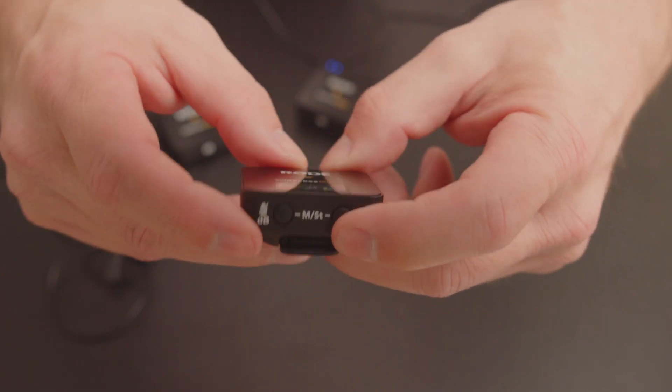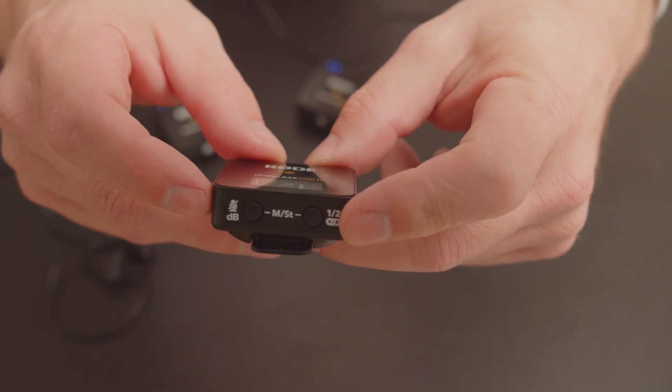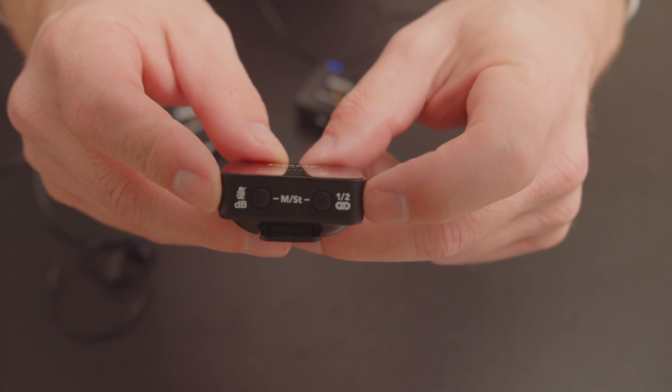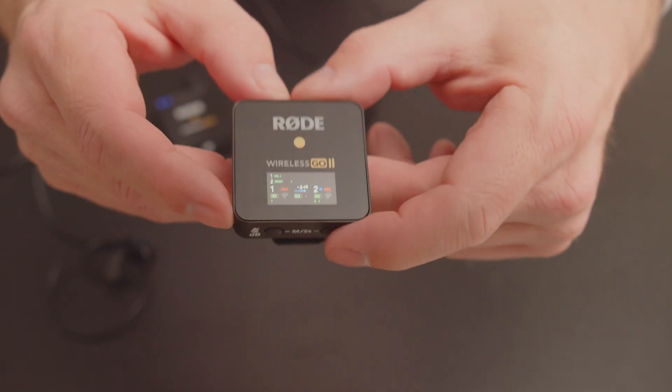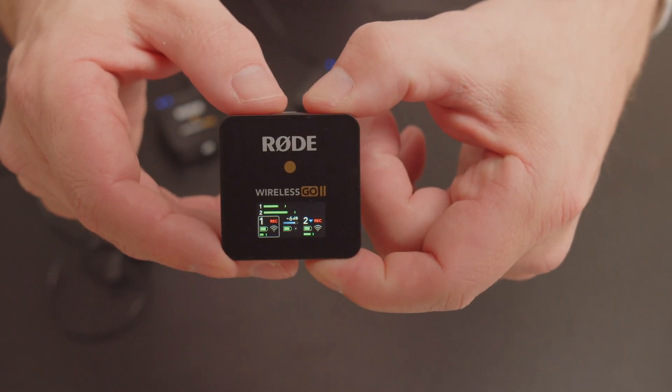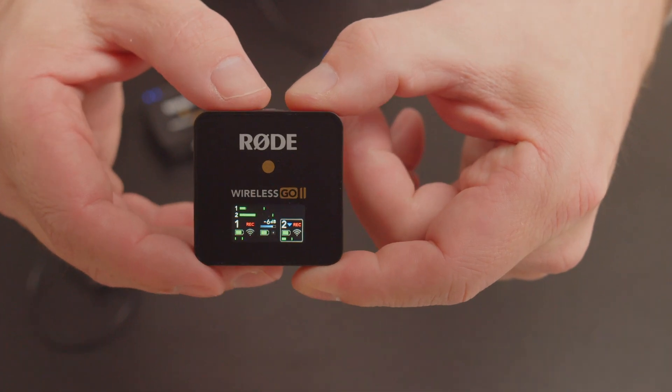First of all you select the channel that you want to disable the pad on, which you can do by pressing the 1-2 button and when you press that it will move between channel 1 and channel 2.